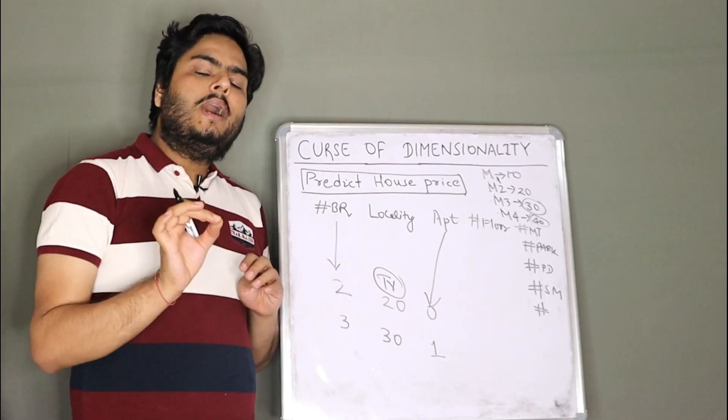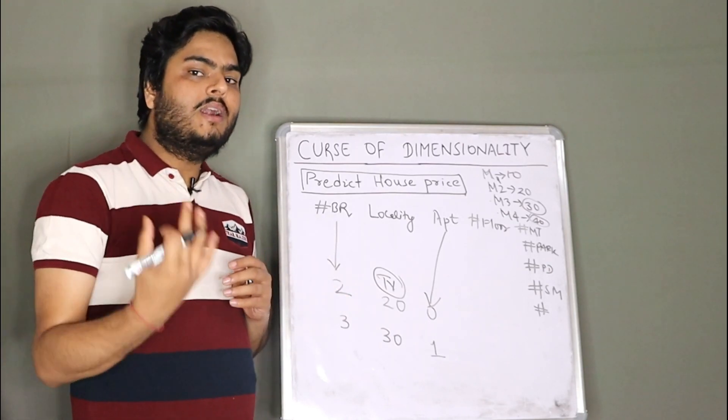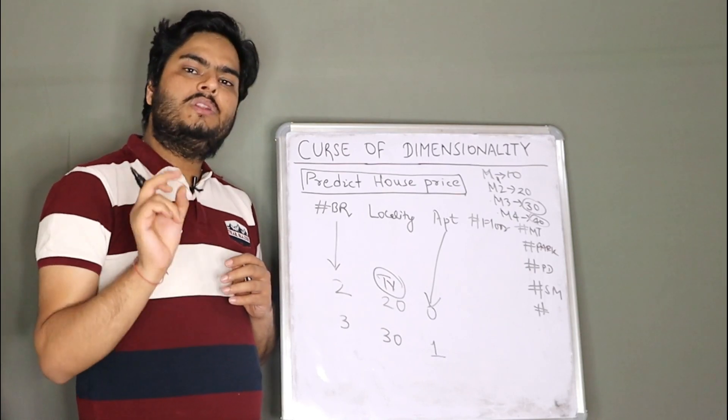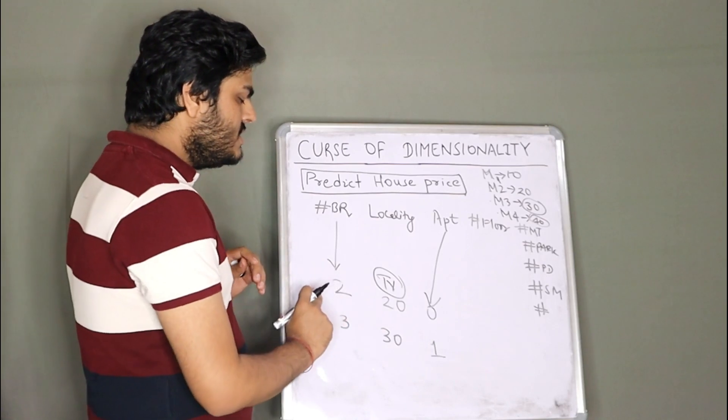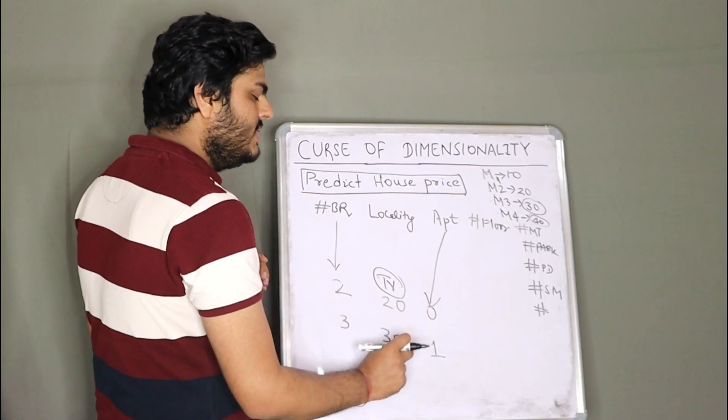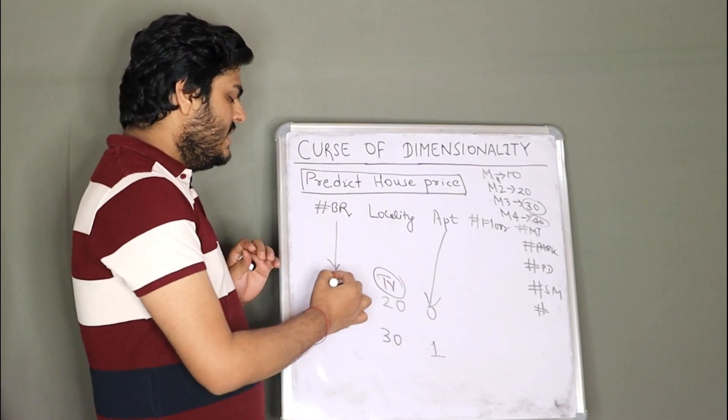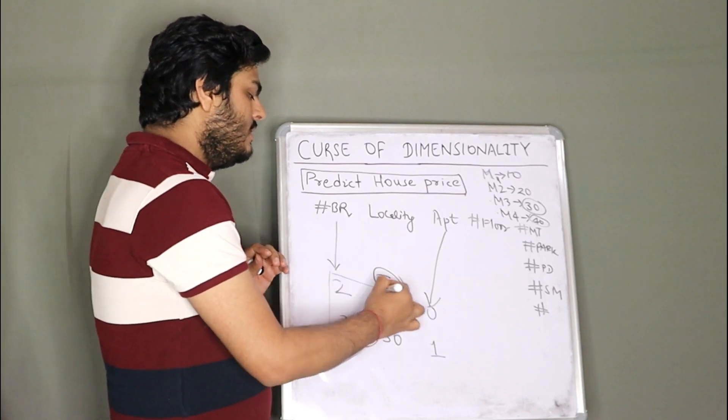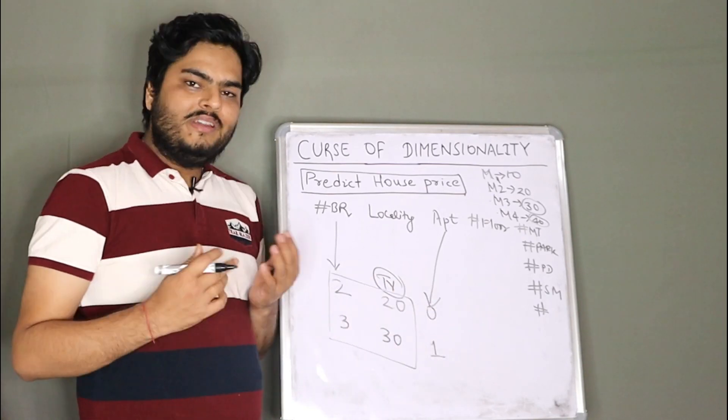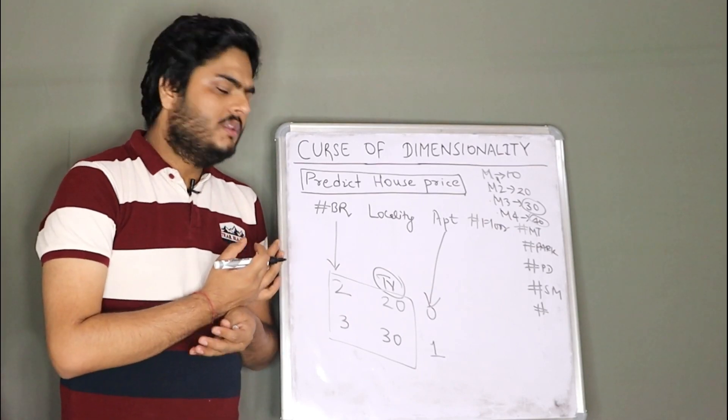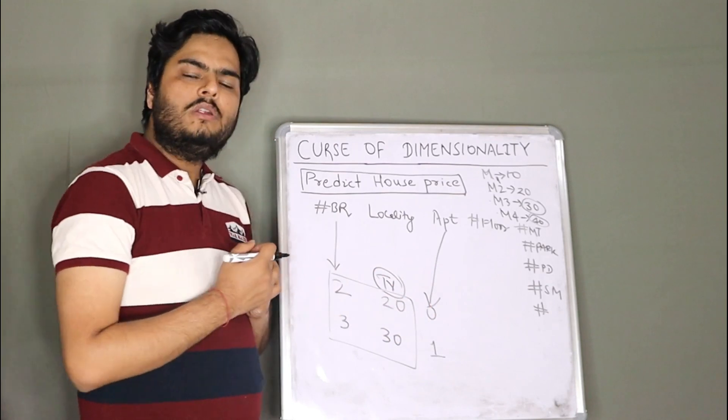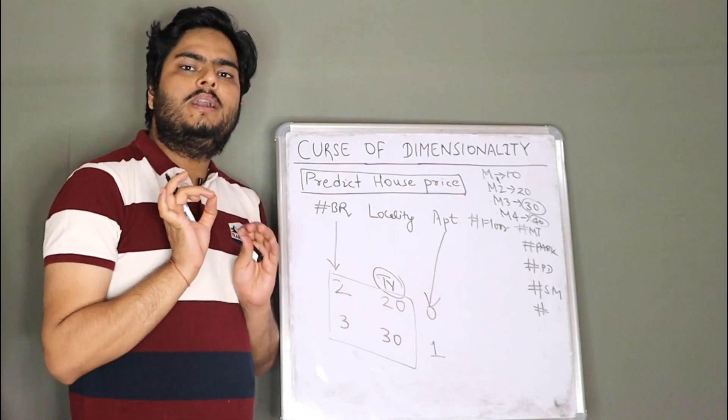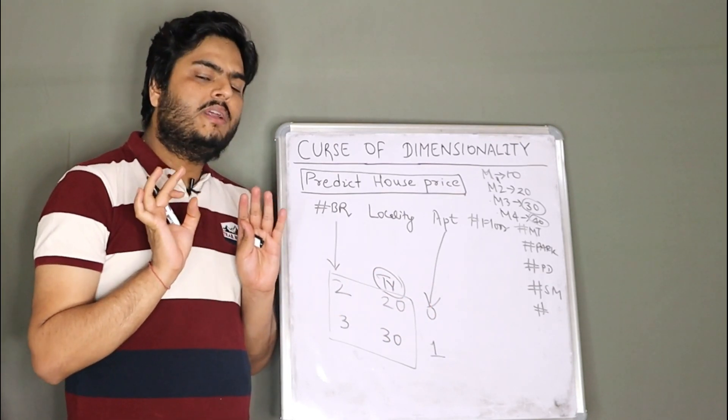And also how it hampers the models learning that I'm going to tell you with a simple example. So here, suppose this is 2, 3, 20, 10, 20, 30 and 0, 1. If you give only this much of data, models life is easy, right? So model will just see, okay, the pattern is like this multiplied by 10. If you give one more feature, model will confuse a little bit, right?